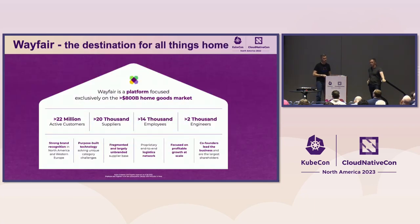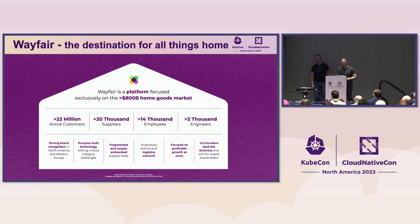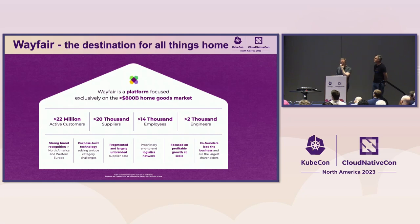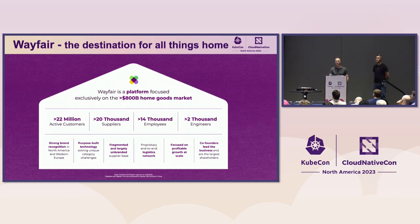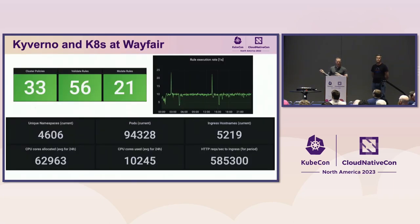Now I'll turn it over to Zach to give you a bit about how Wayfair is using Kyverno in their journey. If you're not aware of Wayfair, we are the destination for all things home — an e-commerce platform in the home goods market. We've got about 14,000 employees right now, around 2,000 engineers. Most of our compute is on GKE and everyone pushes to Kubernetes. We have about 15,000 deploys into production every month — that's around 500 every day — and that all gets processed through our Kyverno admission policies.